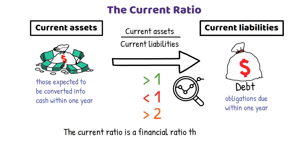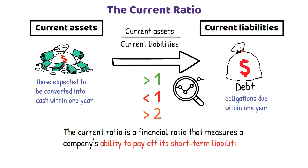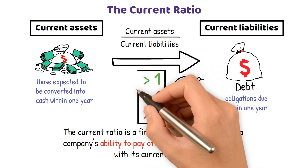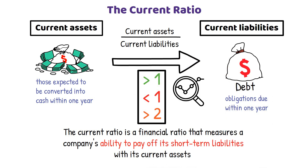The Current Ratio measures a company's ability to pay off its short-term liabilities with its current assets. It is calculated by dividing total current assets by total current liabilities. While it is an essential indicator of liquidity, it may not be the only factor that creditors consider when deciding whether to allow a company to buy on credit.